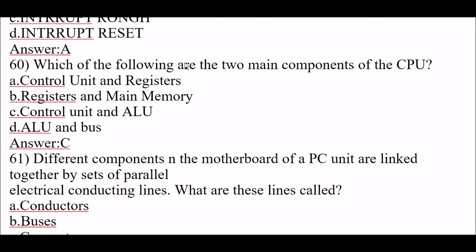Next question: which of the following are the two main components of the CPU? The right answer is option C, control unit and ALU. The two main components of the CPU are the control unit and the ALU — ALU stands for arithmetic logic unit.